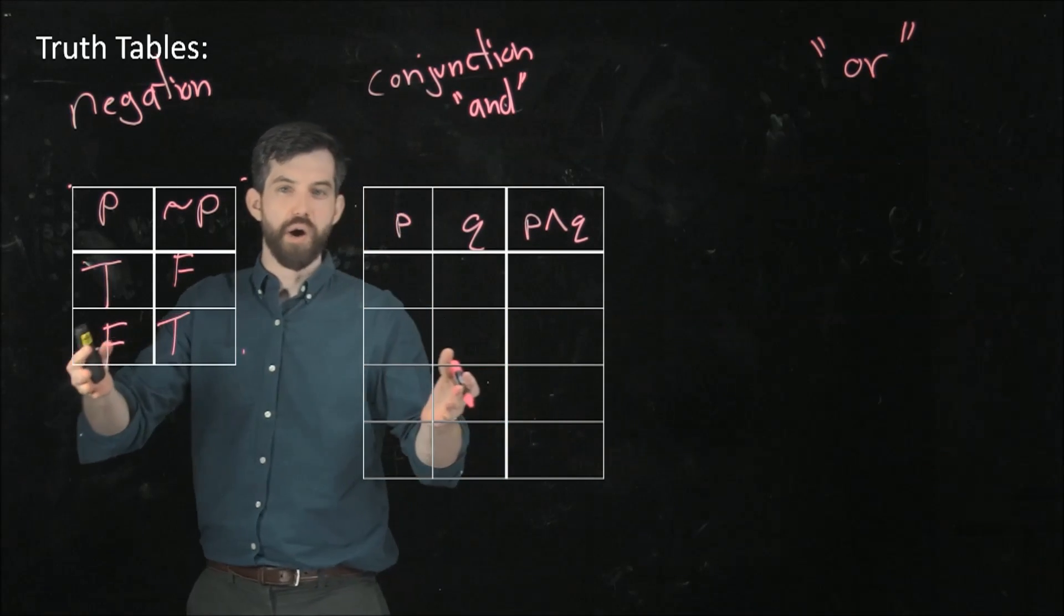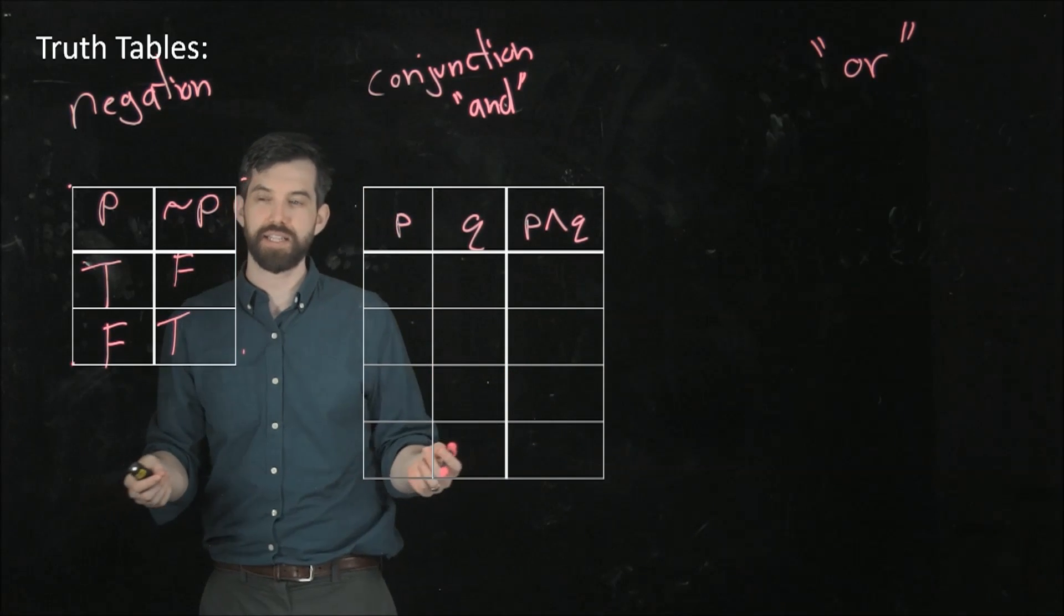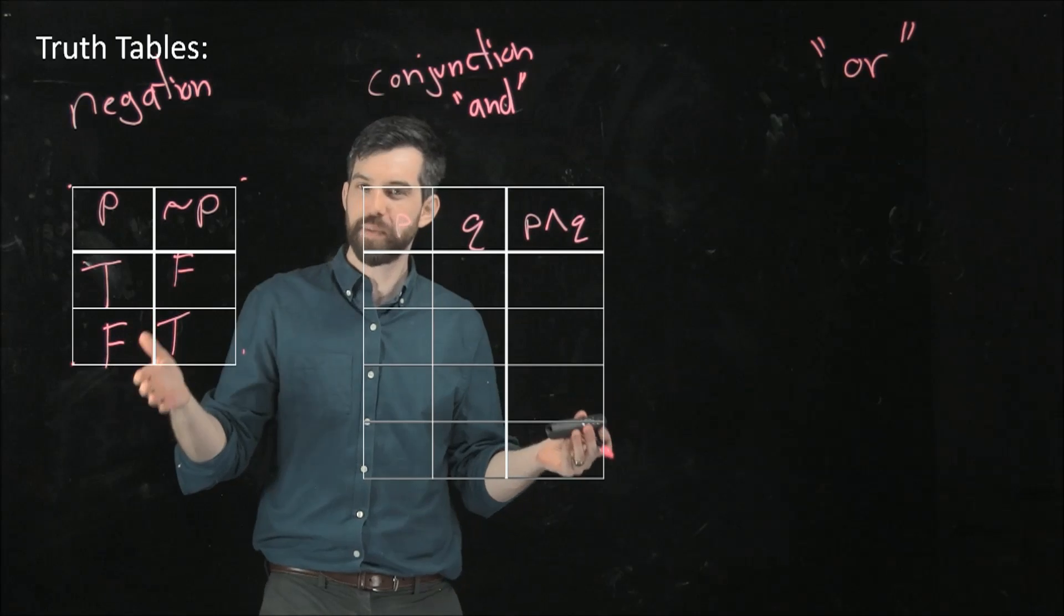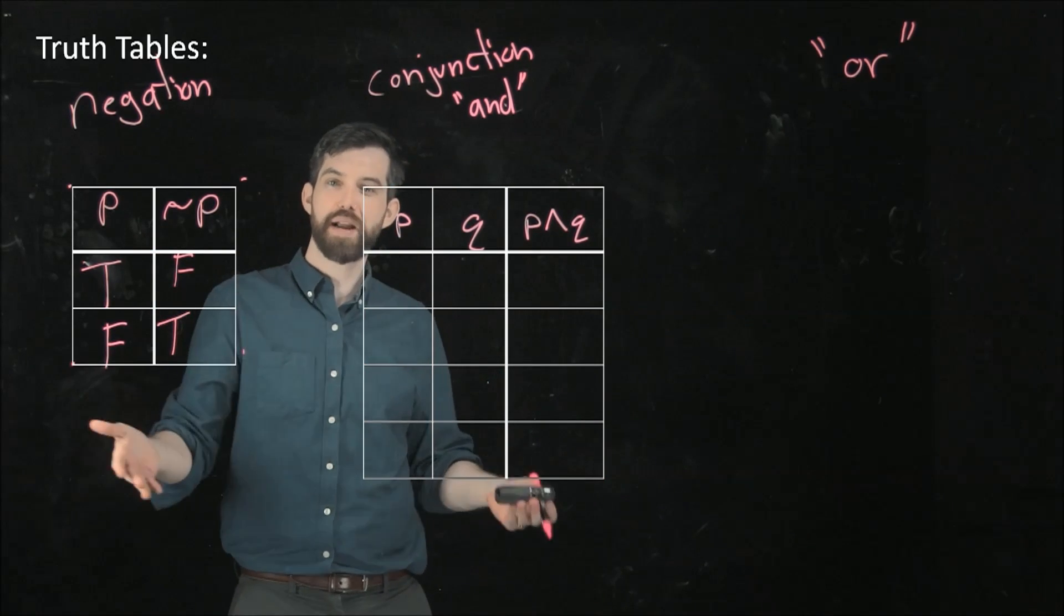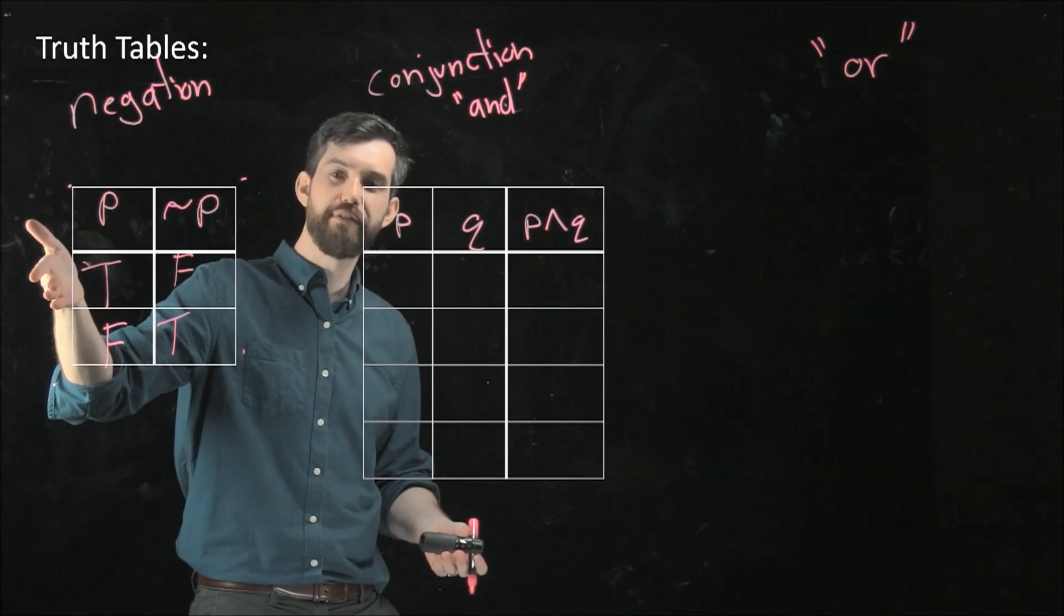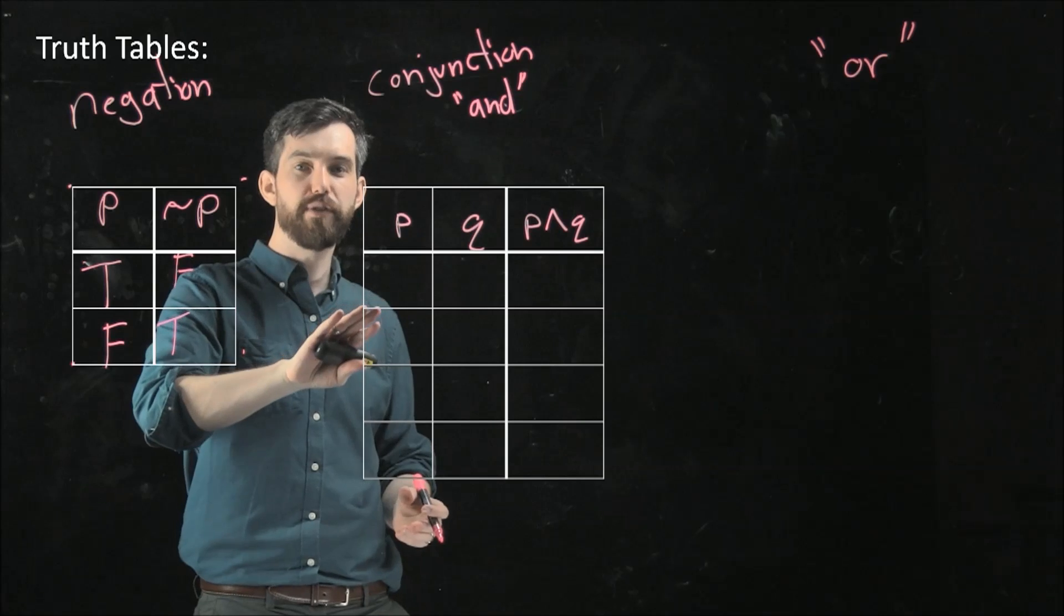Now, in this scenario, I have four different rows. And the reason why I have four rows here is that there's more possibilities for the truth and falseness of p and q respectively. In the first example, there was only one variable. It would either be true or false.